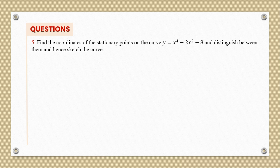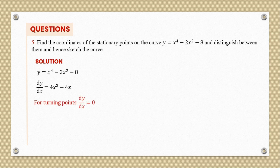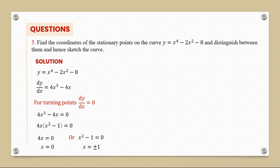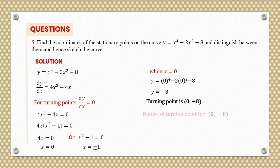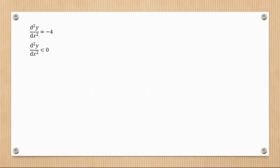Question 5: find the coordinates of the stationary points on y = x⁴ - 2x² - x, distinguish between them, and sketch the curve. Differentiating gives dy/dx = 4x³ - 4x. Setting dy/dx = 0 and factorizing: 4x(x² - 1) = 0, giving x = 0, x = 1, or x = -1. When x = 0, y = -8, turning point (0, -8). The second derivative gives -4, which is less than 0, so this is a maximum point.